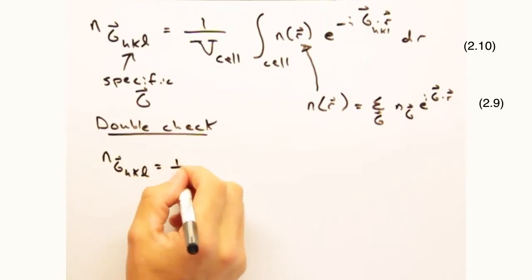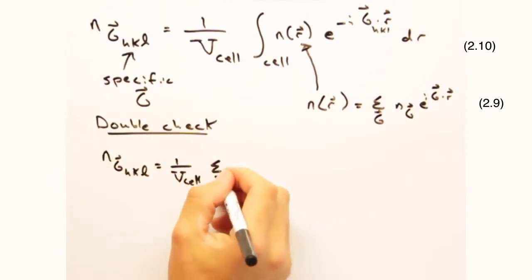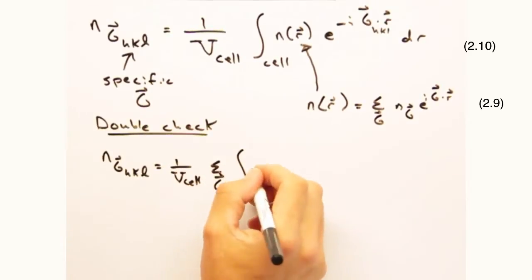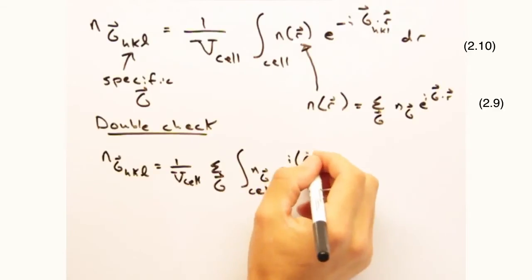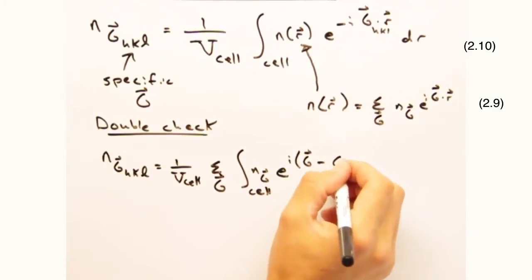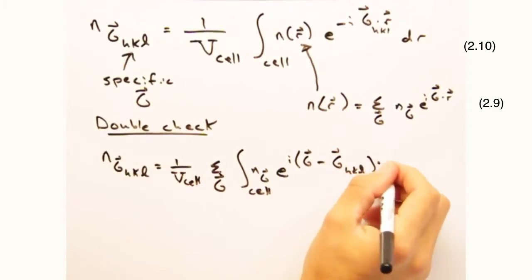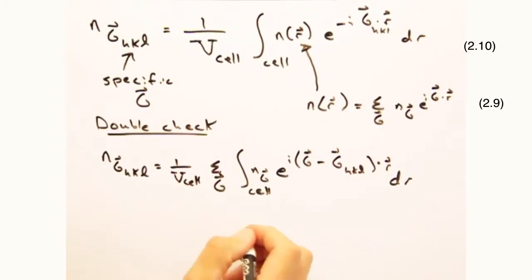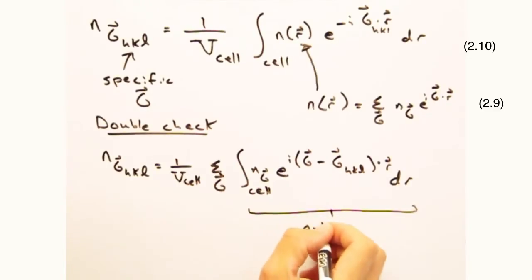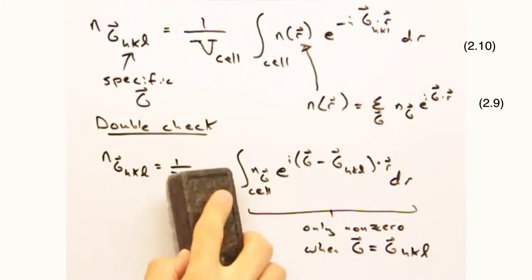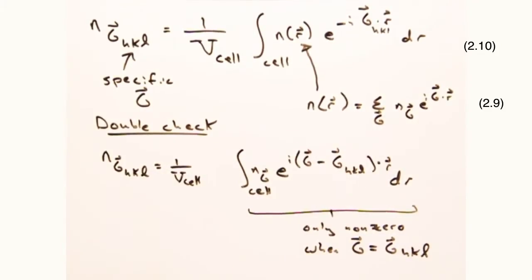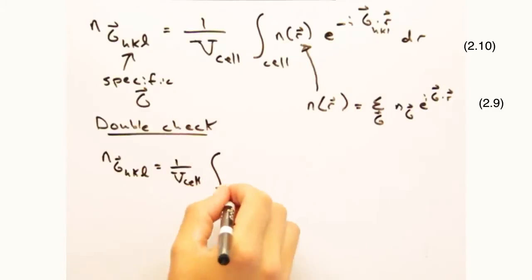Instead of integrating over the whole volume, we're going to slap a one over the cell volume in front and integrate over just one unit cell. So now when we plug in our Fourier series representation of n(r) and move some stuff around, we get the following expression. When integrated over the entire unit cell, there is only one non-zero solution, and that is at g equals g of the same hkl as the coefficient.